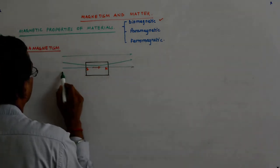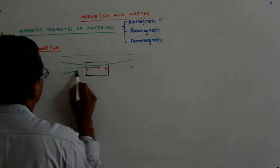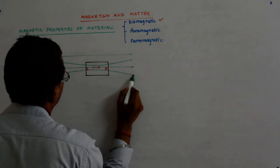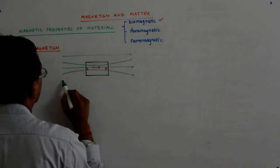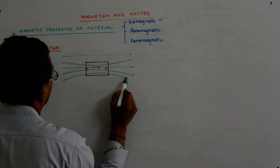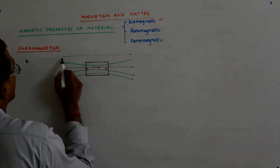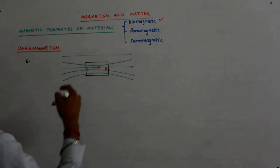So maybe something like this. And here it becomes something like this. So they seem to be more crowded inside the material. Isn't it?